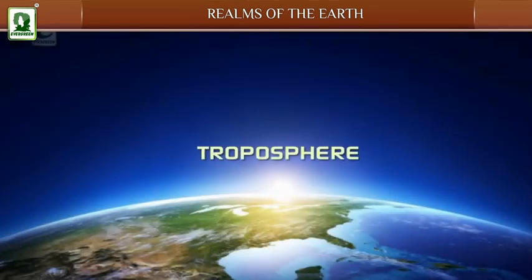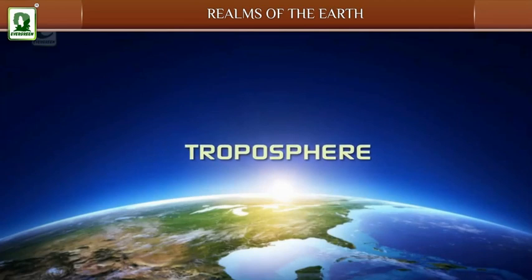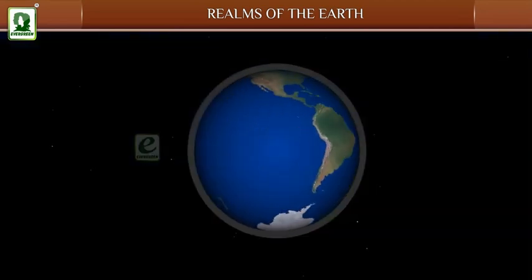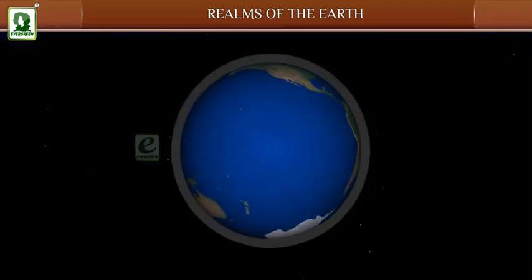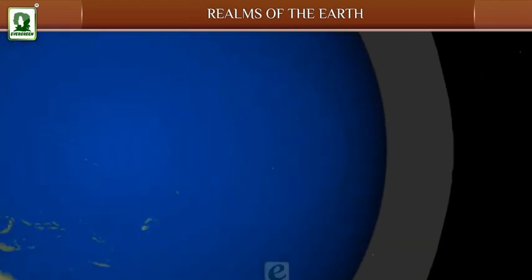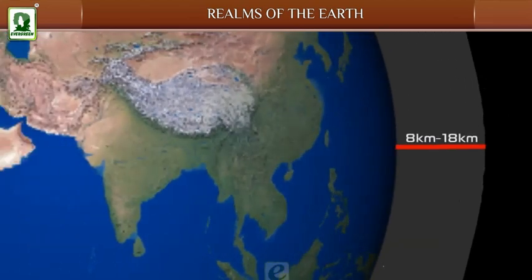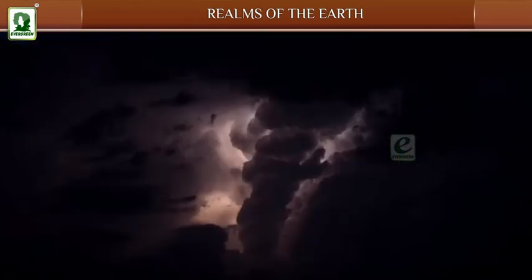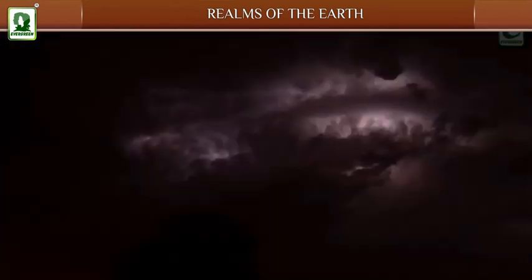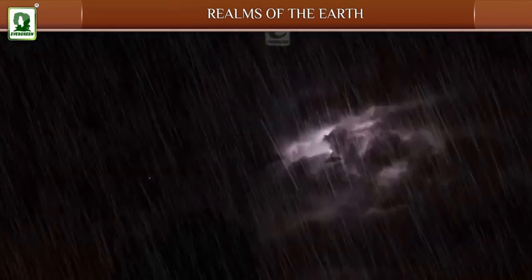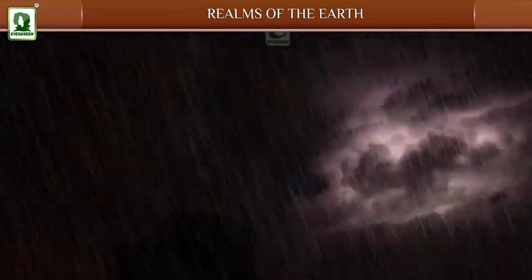Troposphere: The troposphere is the first layer above the surface, stretching from 8 to 18 kilometers. All human activities as well as weather changes such as formation of clouds, rainfall, etc., take place in this layer.